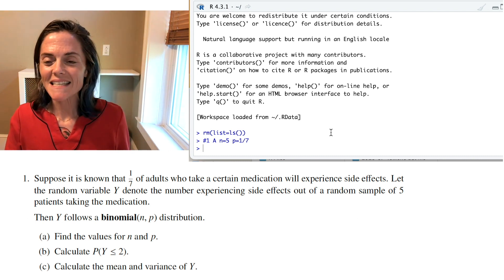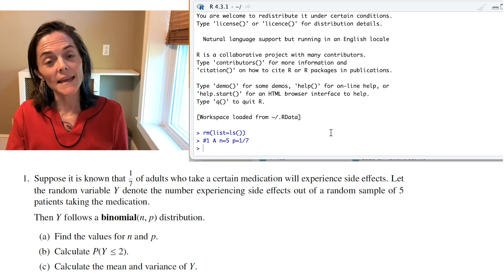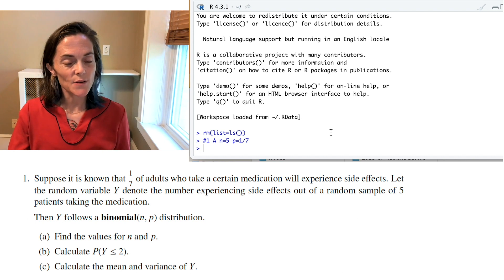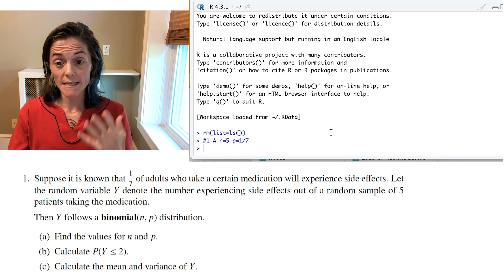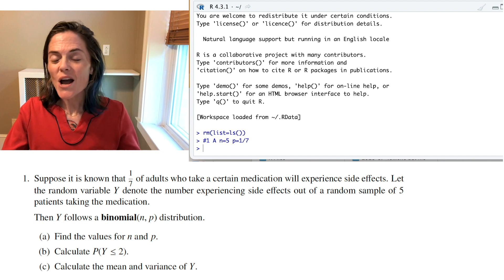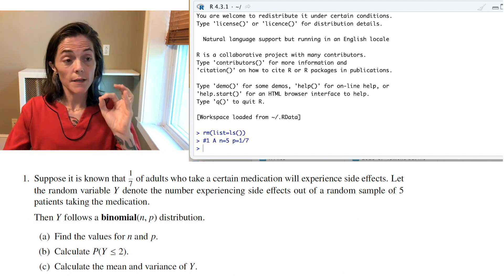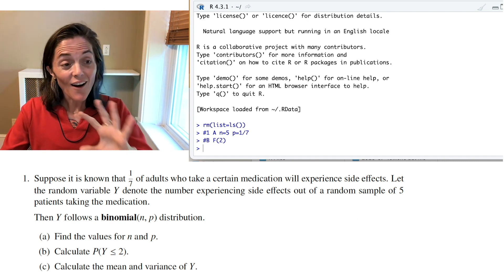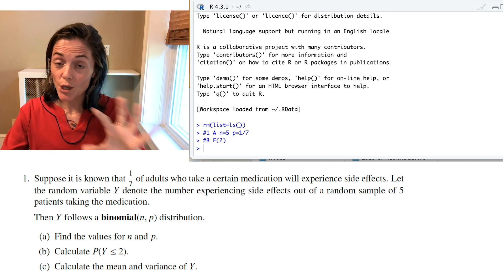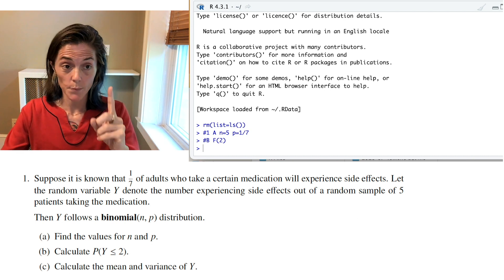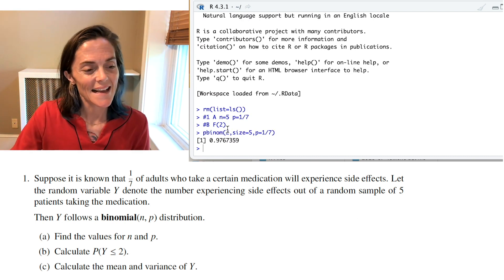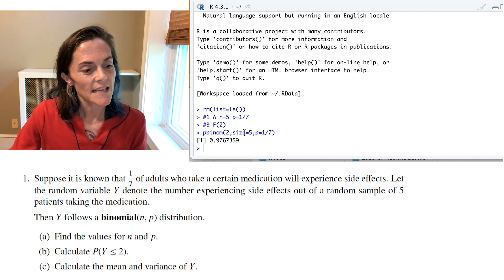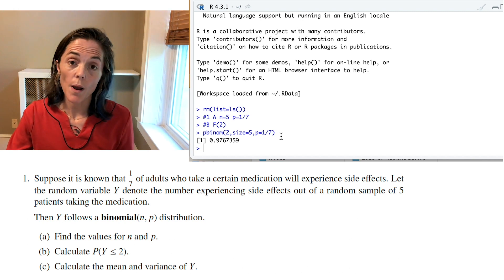Okay, next question. Calculate the probability that Y is less than or equal to 2. Well, there's really two ways we could do this. First, you notice this is exactly capital F of 2, where F is our cumulative distribution function. In R, the prefix for the cumulative distribution function is p. And so, this is what we enter: p binom 2, size is 5, p is 1 over 7, and we have this probability.